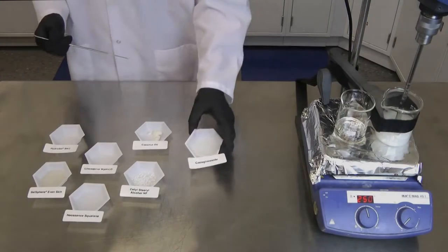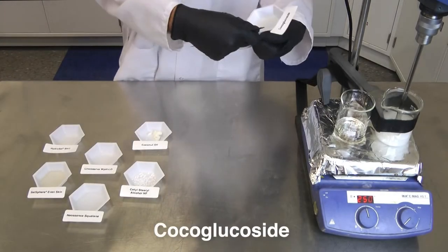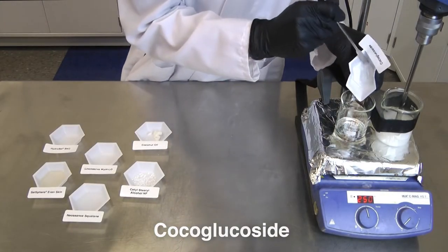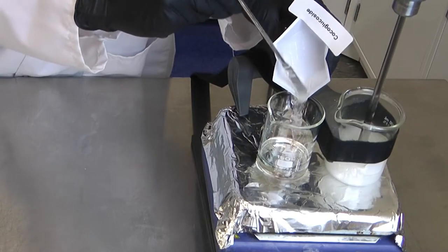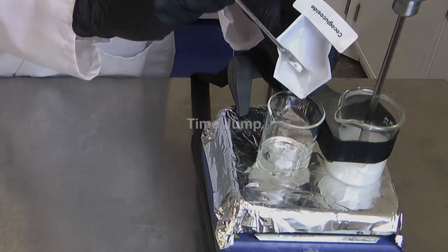The next ingredient that we will be adding to the oil phase is cocoa glucoside. This is going to be our secondary surfactant and will help to build the viscosity of our formulation.